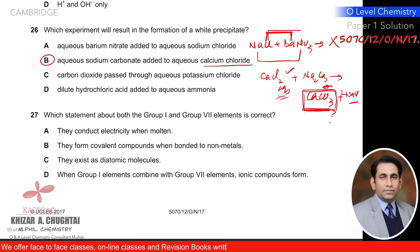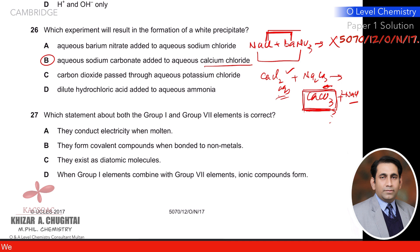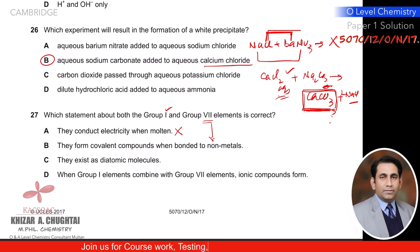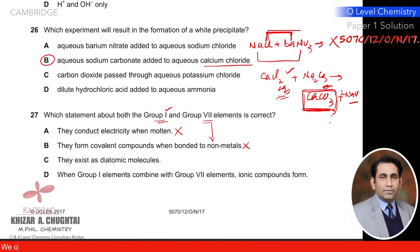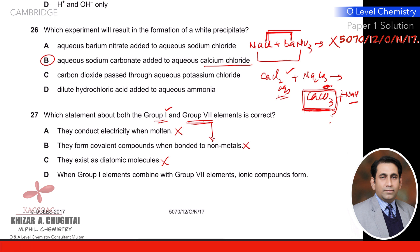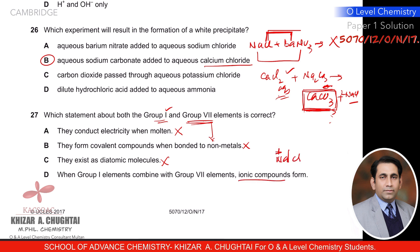Question twenty-seven: which statement about group 1 and group 7 elements is correct? They conduct electricity when molten — true for group 1 metals, not group 7. They form covalent compounds when bonded to non-metals — only group 7, not group 1 metals. They exist as diatomic molecules — true for group 7, not group 1. When group 1 elements combine with group 7 elements, ionic compounds form — yes, like NaCl. So D is the correct option.